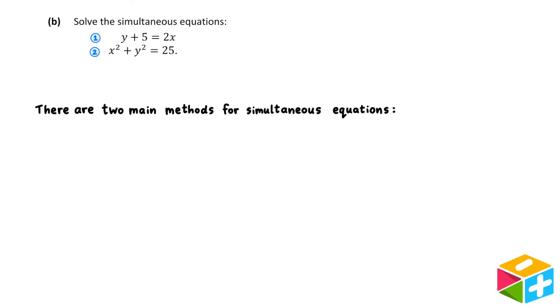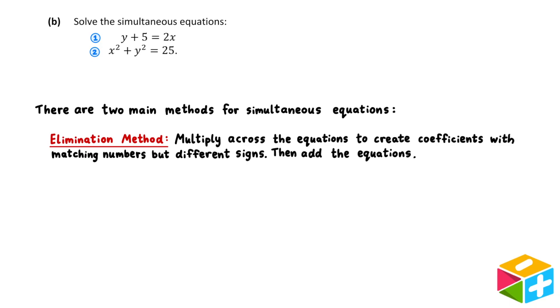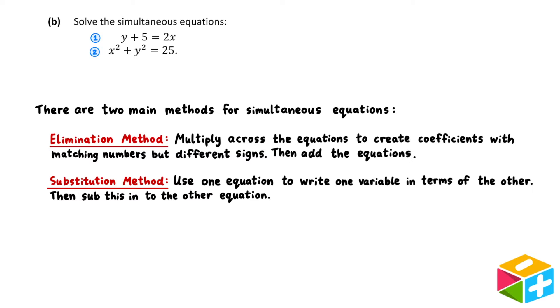When it comes to simultaneous equations, there's two main methods we can use. The first option is the elimination method. Here, we multiply across the equations to create coefficients with matching numbers but different signs. Then, we add the equations. The second option is the substitution method. This involves using one equation to write one variable in terms of the other, then subbing this in to the other equation. Typically, the elimination method is a bit easier to use, however, it doesn't work in all circumstances. In particular, it doesn't work when squares are involved in our equations, so it can't deal with the x squared and the y squared in equation 2.